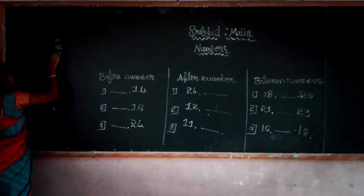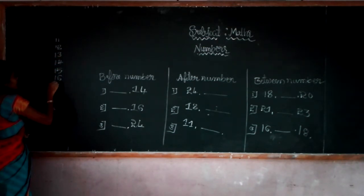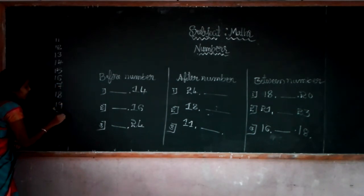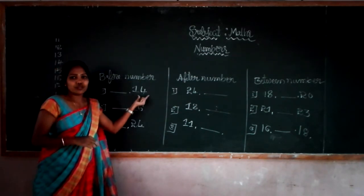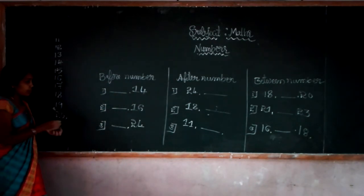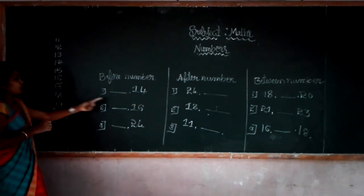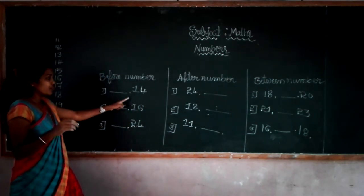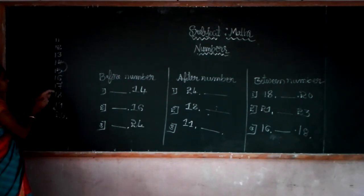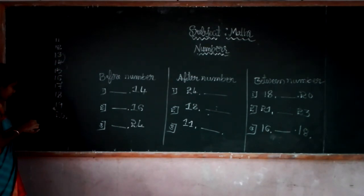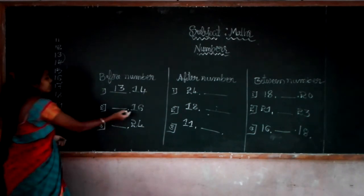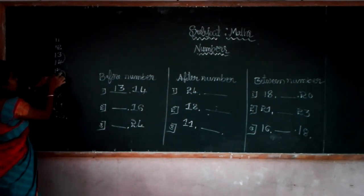On the number line: 11, 12, 13, 14, 15, 16, 17, 18, 19 and then 20. What is the before number of 14? As I told you, if you want to get the before number, you subtract 1 from it. The before number of 14 is 13. Then the next — the before number of 16 is 15.